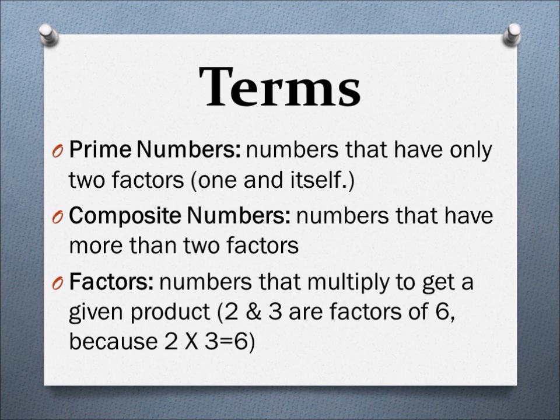Terms: Prime Numbers are numbers that only have two factors, one and itself. Composite Numbers are numbers that have more than two factors. Factors are numbers that multiply to get a given product.